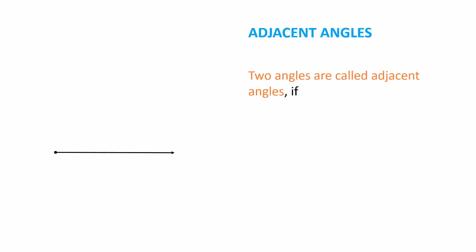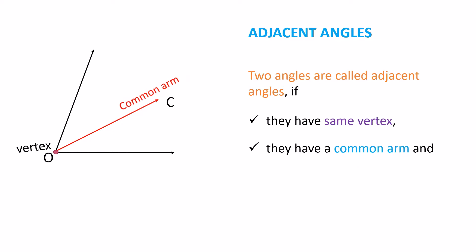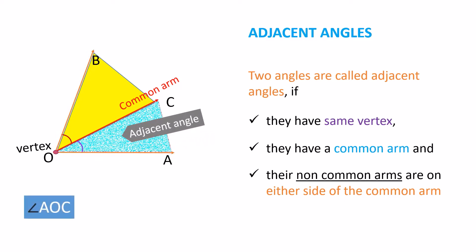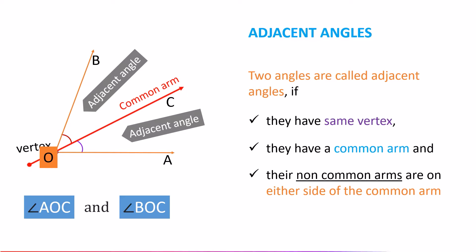Adjacent Angles: Two angles are called adjacent angles if they have the same vertex, they have a common arm, and their non-common arms are on either side of the common arm. Here, angle AOC and angle BOC are adjacent angles. O is the vertex and OC is the common arm.